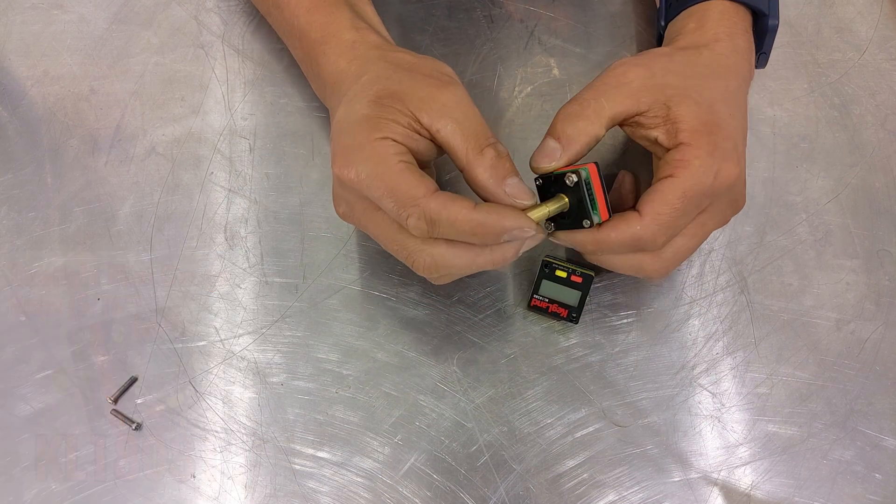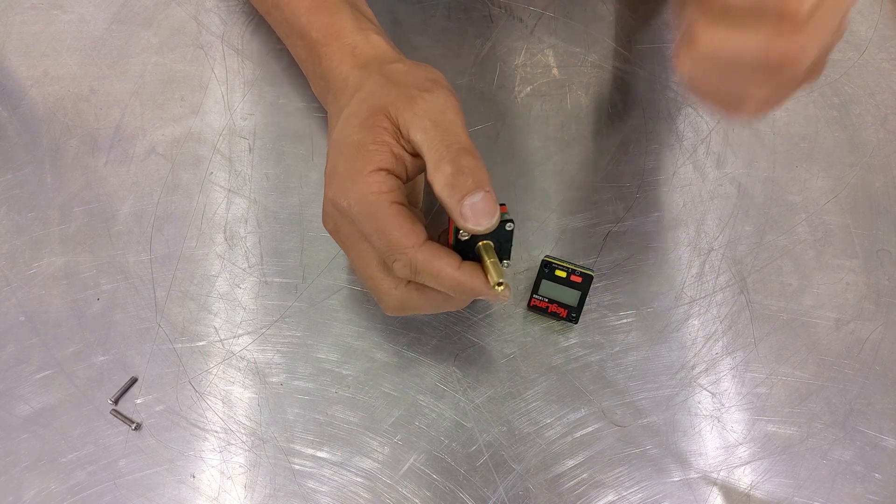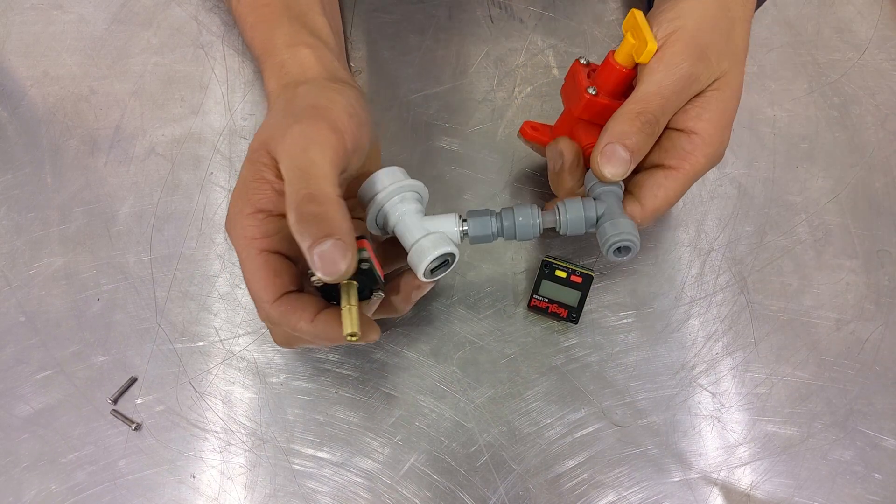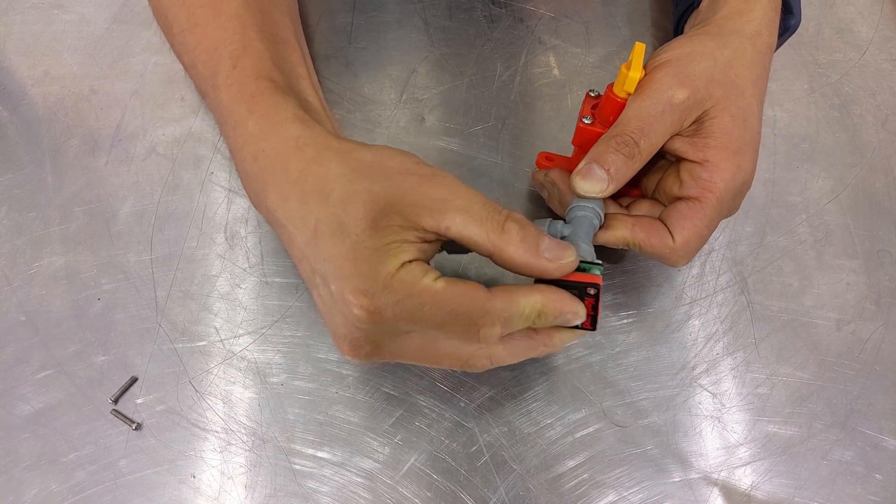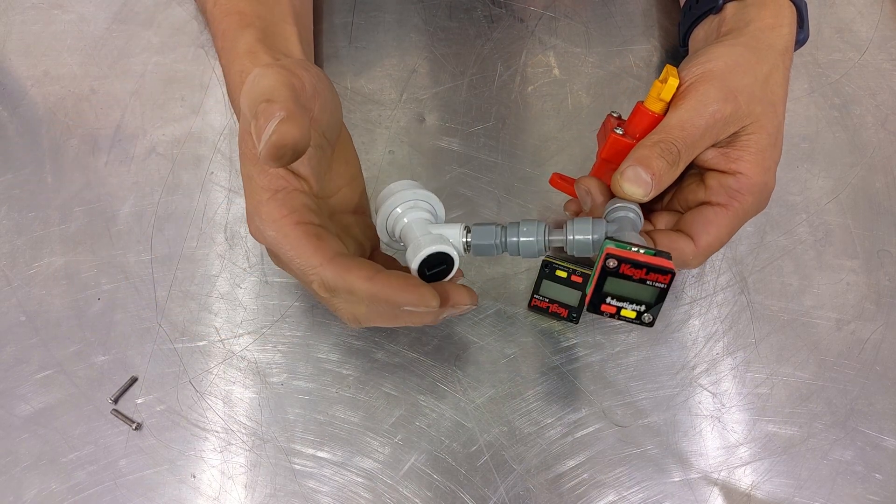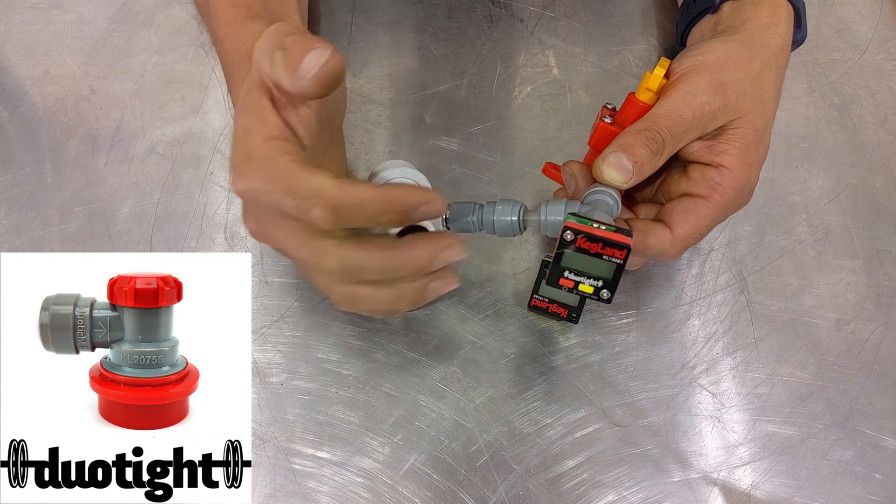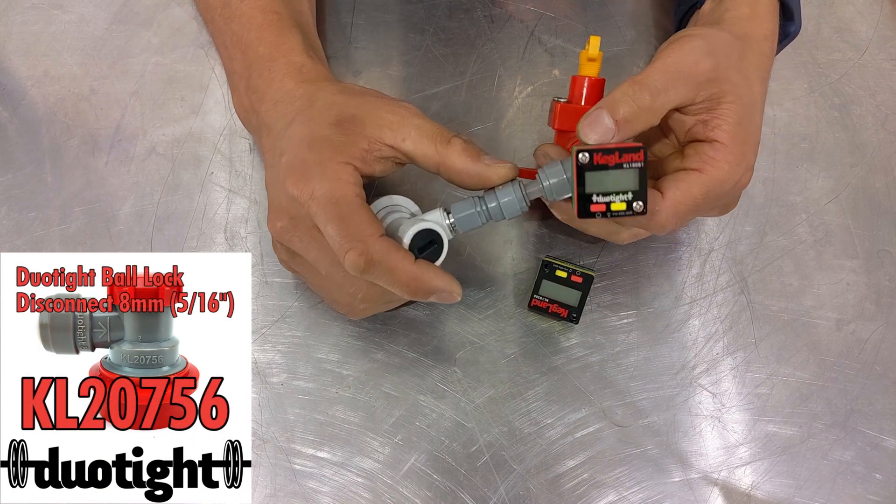This one has a barb or a stem on the back which suits an eight millimeter push in. If you've got any duo tight fittings like this, this type of gauge would just push straight in like that. You could even push the gauge directly into a duo tight ball lock disconnect or pretty much any eight millimeter or five sixteenths type fitting.